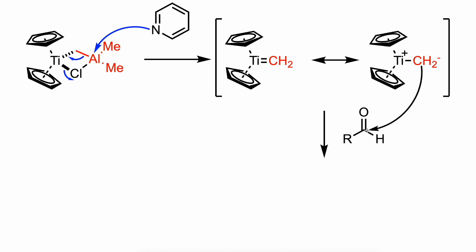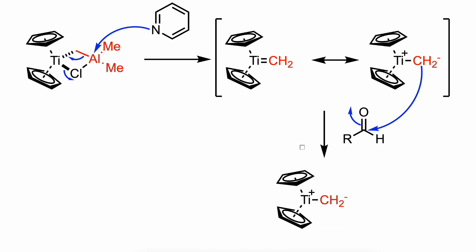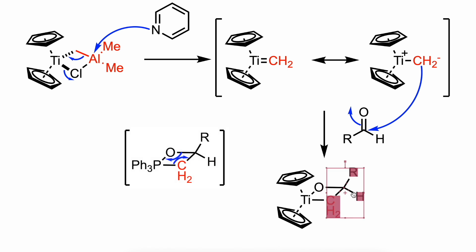Then the carbene reacts with the carbonyl compound to give an oxatitanacyclobutane intermediate that breaks down to the corresponding alkene. Analogous to the Wittig reaction, the driving force is the high oxophilicity of the metal center.